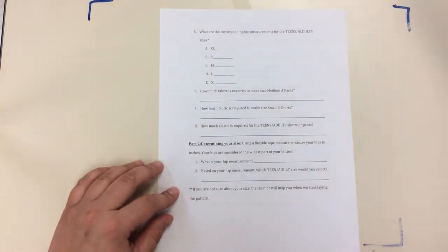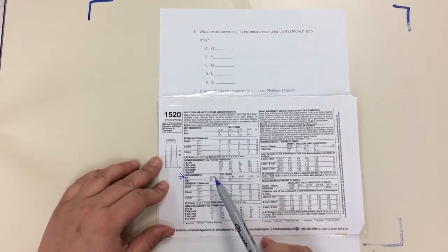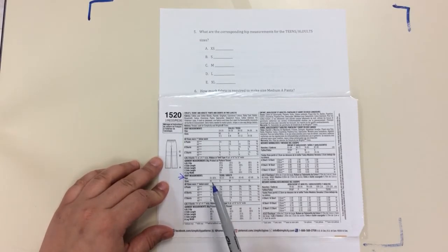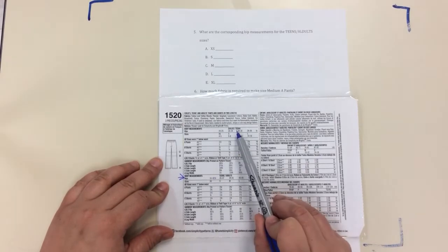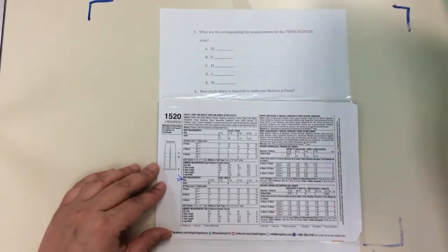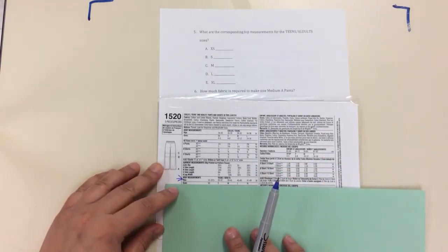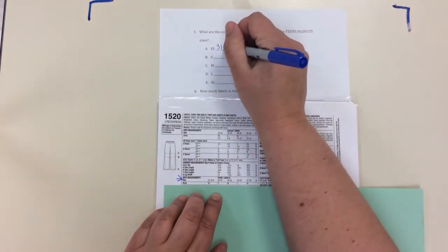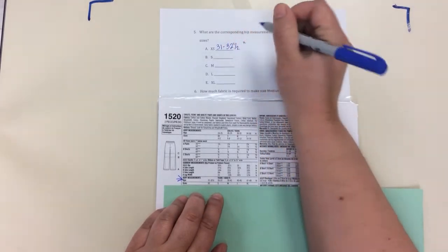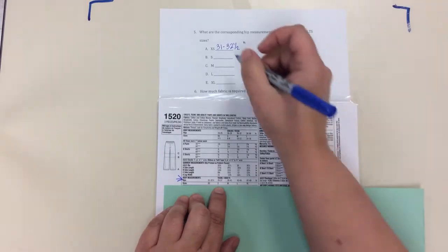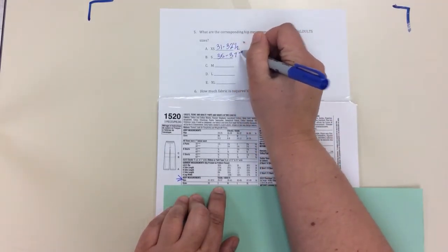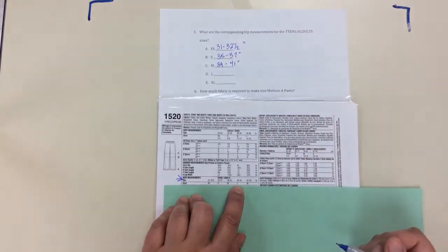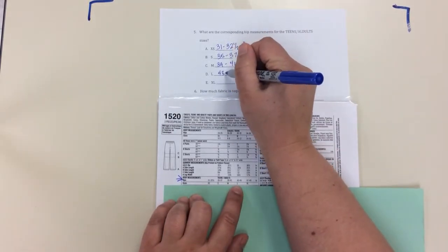So your worksheet here we should have all filled out now. If we go ahead and flip to the other side of this worksheet, this next question is asking about - here's the body measurements, we're measuring our hips - what are the actual measurements and their corresponding sizes. Make sure that we're looking here at the teens and adults. So extra small is 31 to 32 and a half, and these are all in inches. Small is 33 to 35, medium 35 to 37, medium 39 to 41, large 43 to 45, and extra large is 47 to 49.